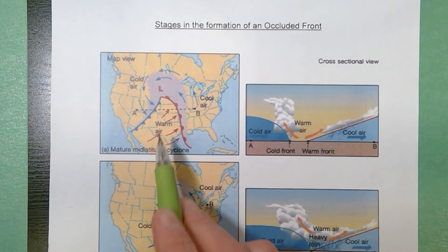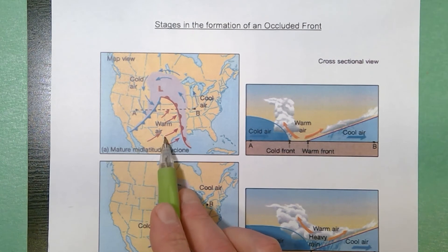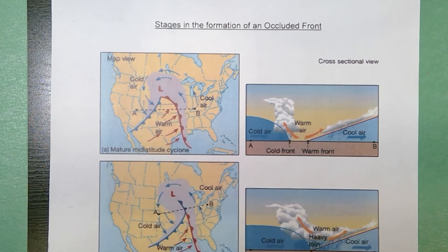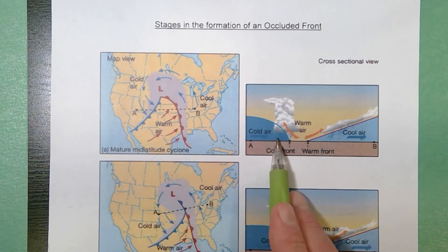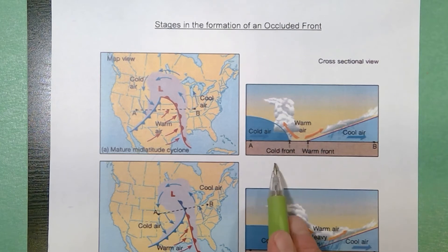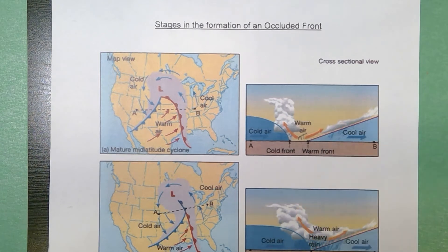On the left you've got an open system, a mature mid-latitude cyclone. You note it's counterclockwise and towards the center, but it's still an open phase. So I have my cold front with the cumulonimbus clouds, the warm front, and the maritime tropical air mass is in the center.